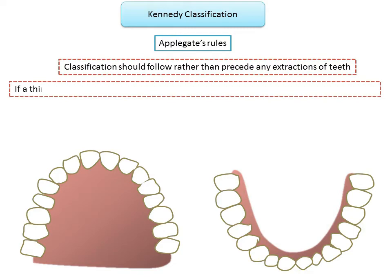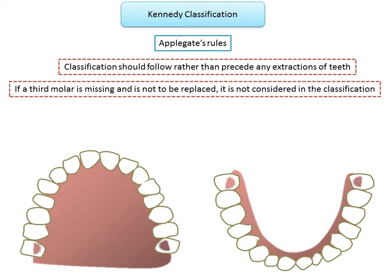Rule 2: if the third molar is missing and not to be replaced, it is not considered in the classification. It will be Class 1 if we are replacing the third molars, whereas if we are not replacing them, it will be a Class 3 with teeth present anterior and posterior to it. Including or omitting the third molar in the classification makes a significant difference.